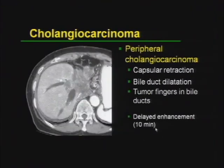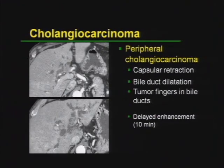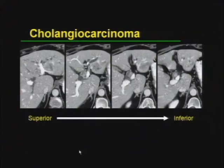Cholangiocarcinoma may also have delayed enhancement. Here's an example: a large mass with dilated bile ducts — if you see dilated bile ducts, immediately think cholangiocarcinoma as a possibility — along with retraction of the liver capsule. Here's another example of a little mass in the liver hilum with quite a lot of bile duct obstruction and dilatation; we don't usually see that with colon cancer mets or HCC. We can see a finger extending through the bile ducts. Another example shows a mass in the left and right lobes of the liver with a finger of tumor extending down the common bile duct — very typical of a cholangiocarcinoma.